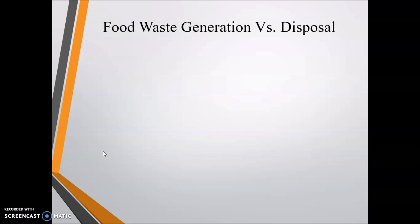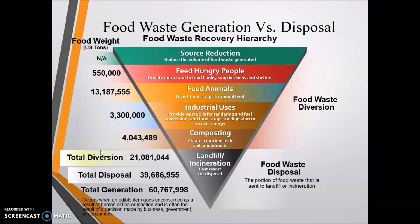Next is a food generation versus disposal diagram showing how much food waste in tons is reduced or wasted in America — total generation, total disposal, and total production. Source reduction reduces the volume of food waste generated at the source. Feed hungry people by donating extra food to banks, co-ops, kitchens, and shelters. Feed animals by diverting food scraps to animal feed. Industry uses include wet rendering, fuel conversion, and anaerobic digestion for energy recovery. Composting creates nutrients for soil enrichment for agriculture. Lastly, landfill incineration is the last resort for disposal.